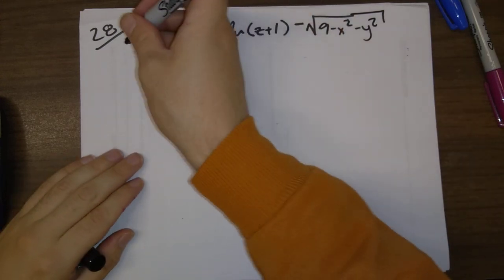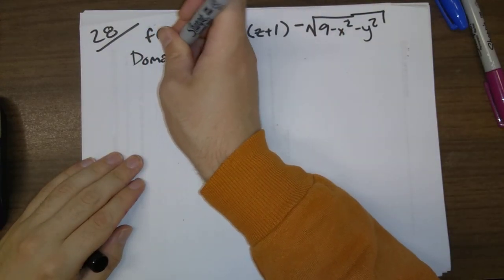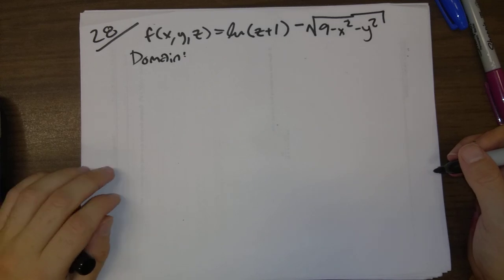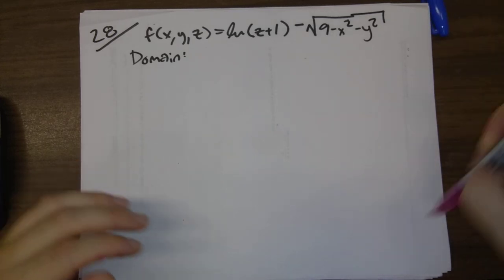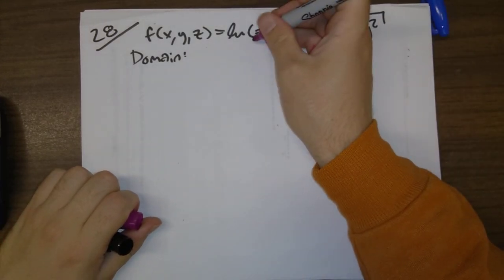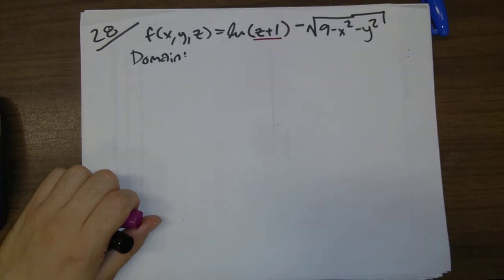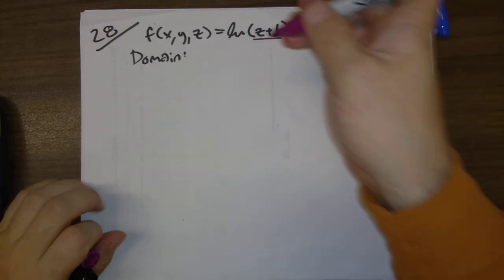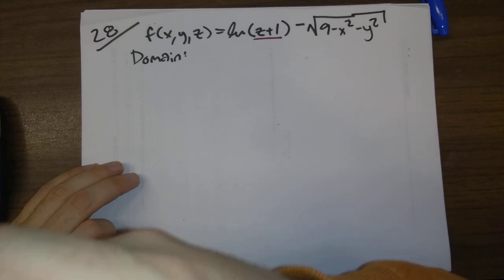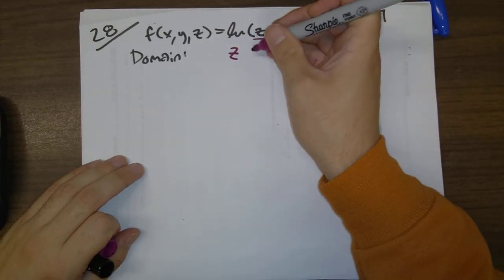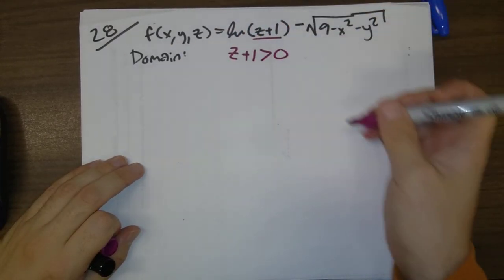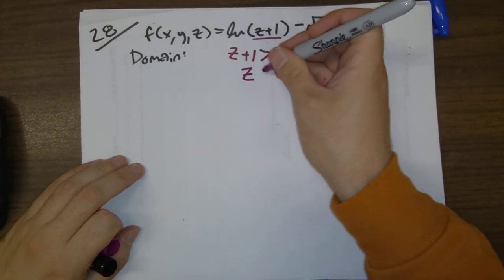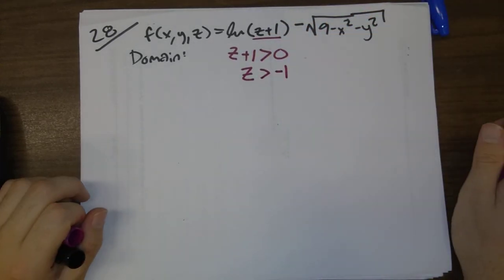So we want the domain — what are the allowable x, y, and z values? Natural log of something requires that something to be positive. So we want z plus 1 to be greater than 0, or equivalently z to be bigger than minus 1.